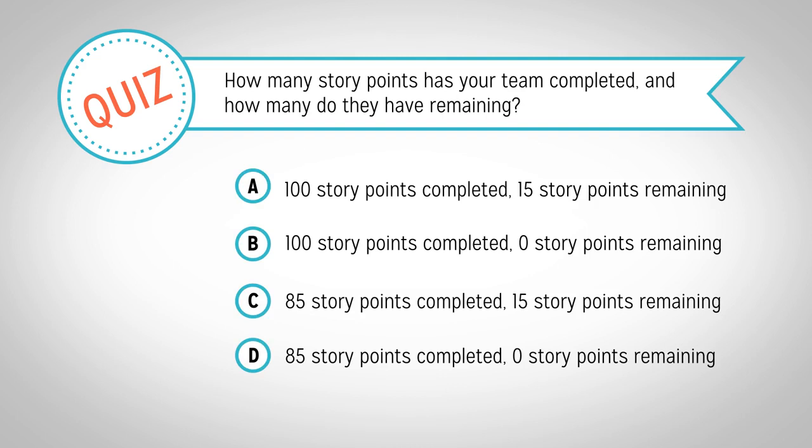In this project, there were 100 total story points. We know this because there were 100 story points at the beginning of Sprint 1. At the beginning of Sprint 6, which is the last sprint of the project, there are 15 story points remaining. Since we started with 100 and have 15 remaining, the team has completed 85 story points. Therefore, C is the correct answer.